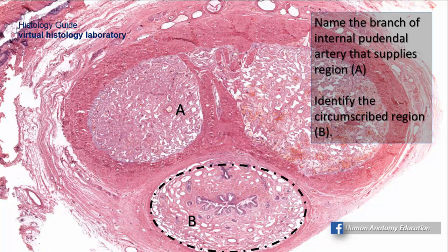Name the branch of the internal pudendal artery that supplies region A. This is a cross-section of the penis; region A is the corpus cavernosum, while region B is the corpus spongiosum. The artery within the corpus cavernosum is called the deep artery of the penis — a branch of the internal pudendal artery. The dorsal artery of the penis is located in the fascia, while the deep artery of the penis is located within the corpus cavernosum.